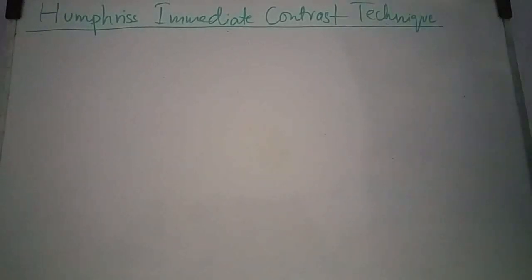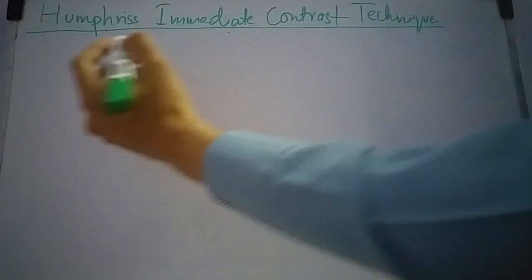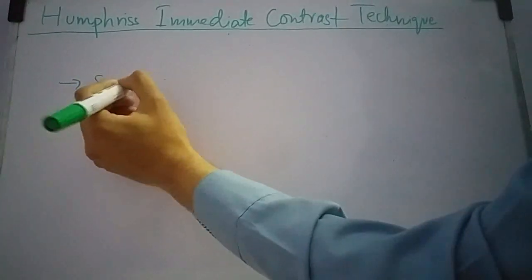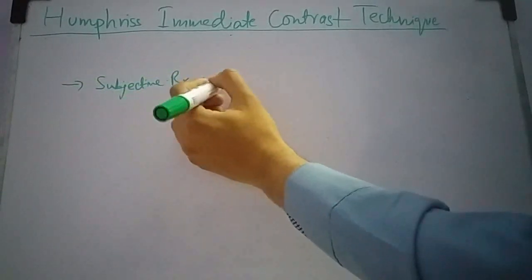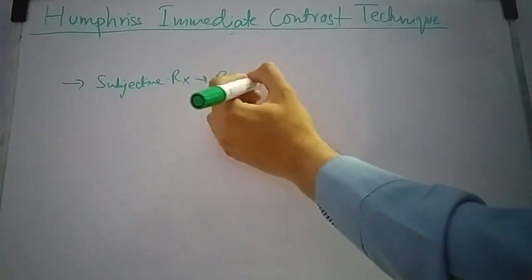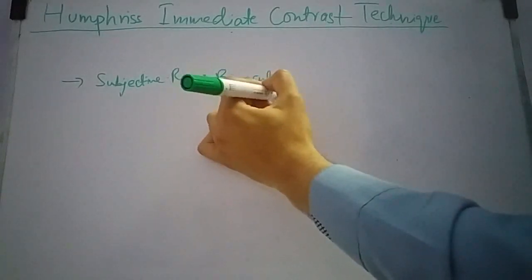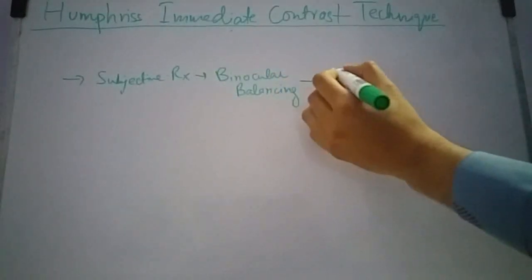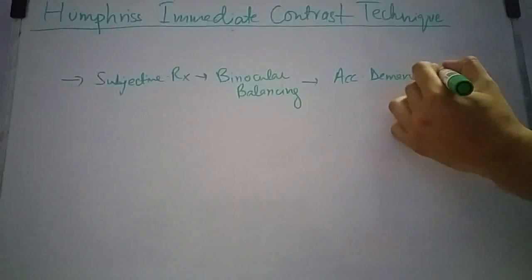Today I will tell you about Humphrey's Immediate Contrast Technique. This technique is used in subjective refraction for binocular balancing. The main purpose of binocular balancing is to equalize the accommodative demand in both eyes.